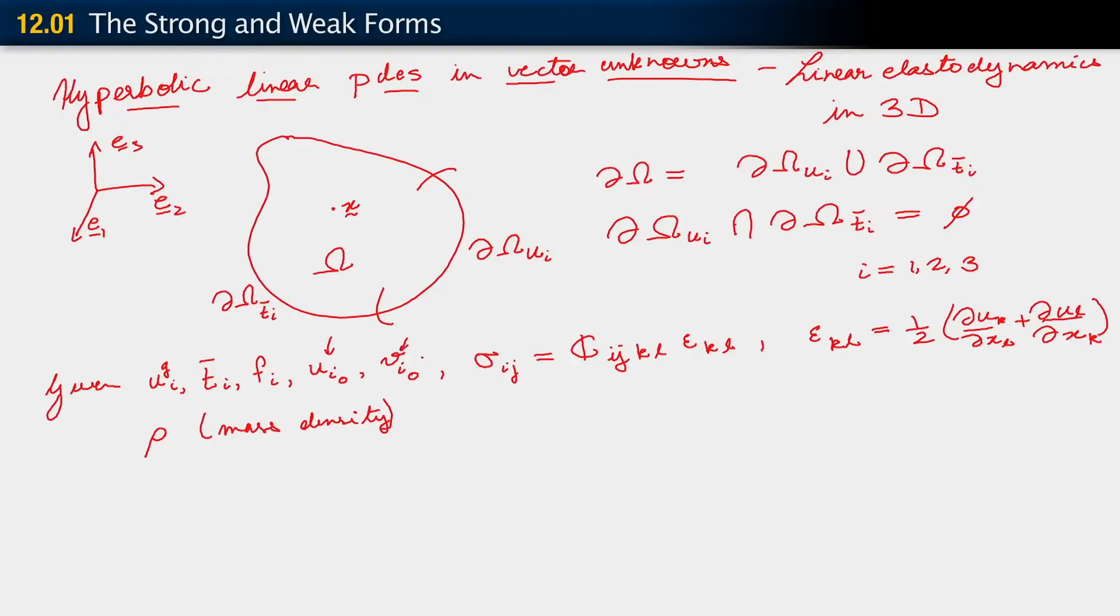The problem that we are trying to find is to find u_i. Now, it's a function of position and time. And remember that i runs over 1, 2, 3. So everything that I've written on the first line, the first five functions is down here. These functions are all just components of vectors. So we want to find u_i, such that.